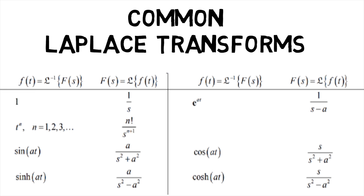For hyperbolic trigonometric functions like sinh at and cosh at, the respective Laplace transforms are a upon s squared minus a squared and s upon s squared minus a squared.